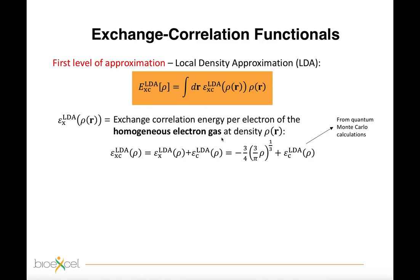This can be particularly attributed to the fact that LDA gives the correct sum rule to the so-called exchange-correlation hole, meaning that there is a total electronic charge of one electron excluded from the neighborhood of the electron at the point r.